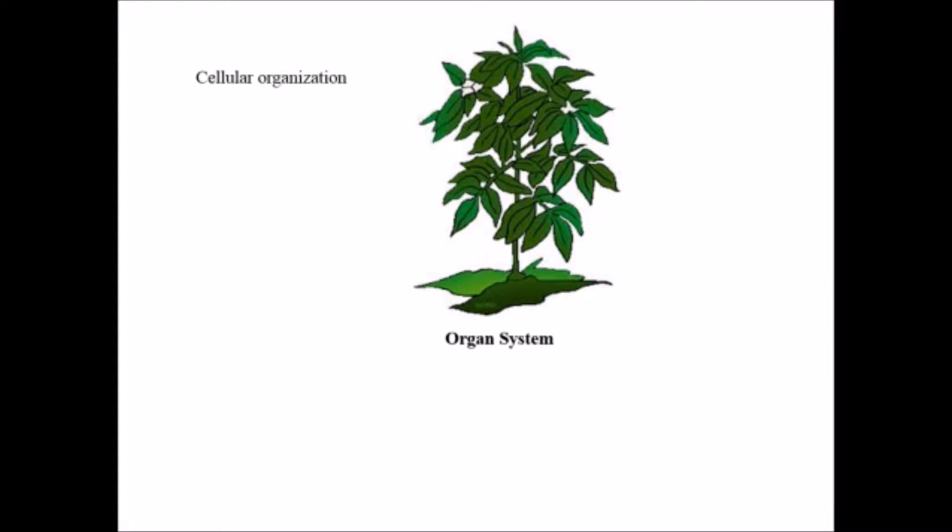They have a definite cellular organization. All living organisms start with the cellular level, then develop into tissues, tissues develop into organs, and organs develop into organ systems. Each and every living organism has a different cellular organization.